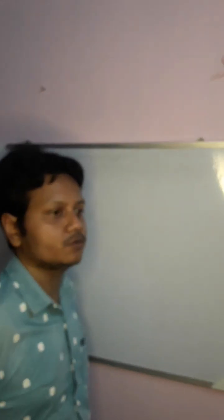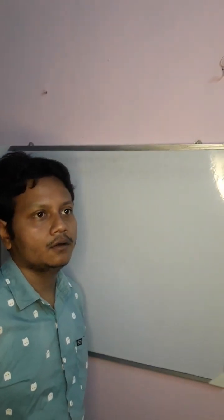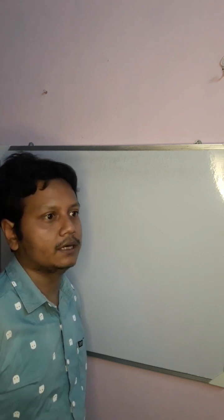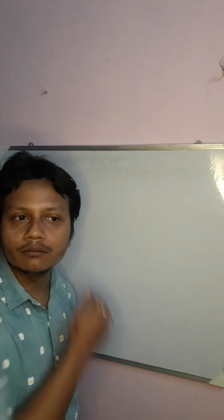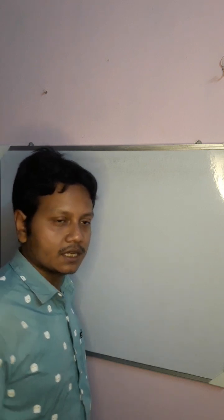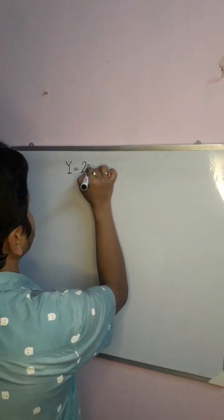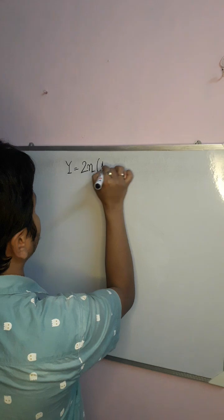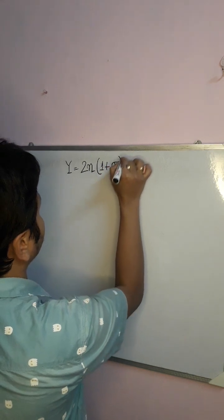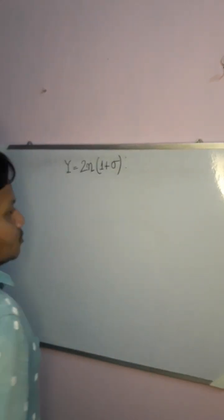Welcome friends to my YouTube channel. In my last lecture I showed the relation Y equals 3K times 1 minus 2 sigma, which is the relation between Young's modulus, bulk modulus, and Poisson's ratio. In today's lecture I shall discuss another relation: Y equals 2 eta times 1 plus sigma.